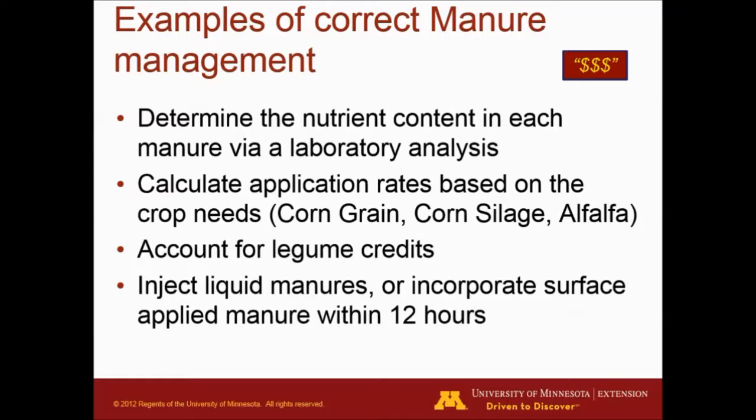Here are some examples of correct manure management. Make sure you determine the nutrient content of each manure via a lab analysis, and make sure your client provides you with one. Calculate application rates based on crop needs—it's not the same for corn grain, corn silage, or alfalfa. Account for legume credits: if you're applying manure at the end of a soybean year and planting corn the following year, account for the nitrate left by the soybean. Inject liquid manure or incorporate surface-applied manure within 12 hours to conserve the nitrate in the soil.